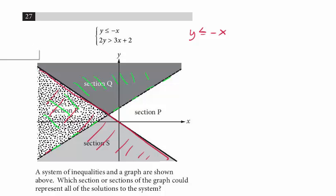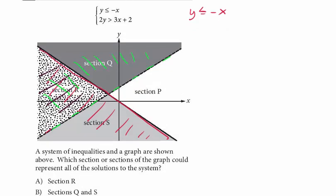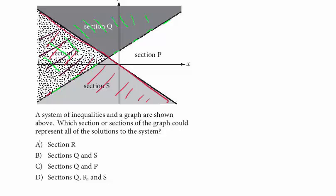And so we want the region that has solutions to both lines, and you can see the one that includes both colors would be here, and so the answer is section R, A.